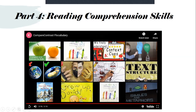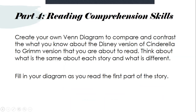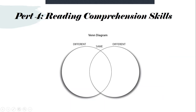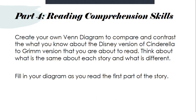Just like in the video from Flocabulary, this is a Venn diagram. Whatever overlaps is the same; whatever is on the outside is what is different. The comparison — what is the same — is in the overlapping circles. What is different is called contrasting, shown on the outside. I want you to create your own Venn diagram to compare and contrast what you know about the Disney version of Cinderella and the Grimm version you're about to read. Think about what is the same about each story and what is different, filling in your diagram as you read the first part of the story. Put similar or same in the middle; on one side write Disney, on the other side write Grimm — G-R-I-M-M.